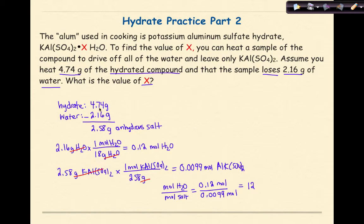So the final formula for this hydrated salt is KAl(SO4)2•12H2O. The X is represented by the 12 we calculated.